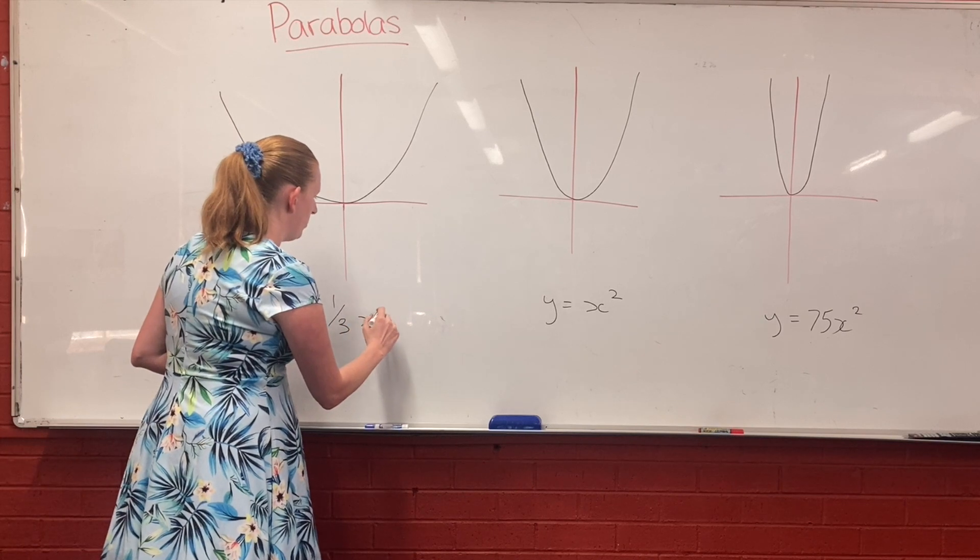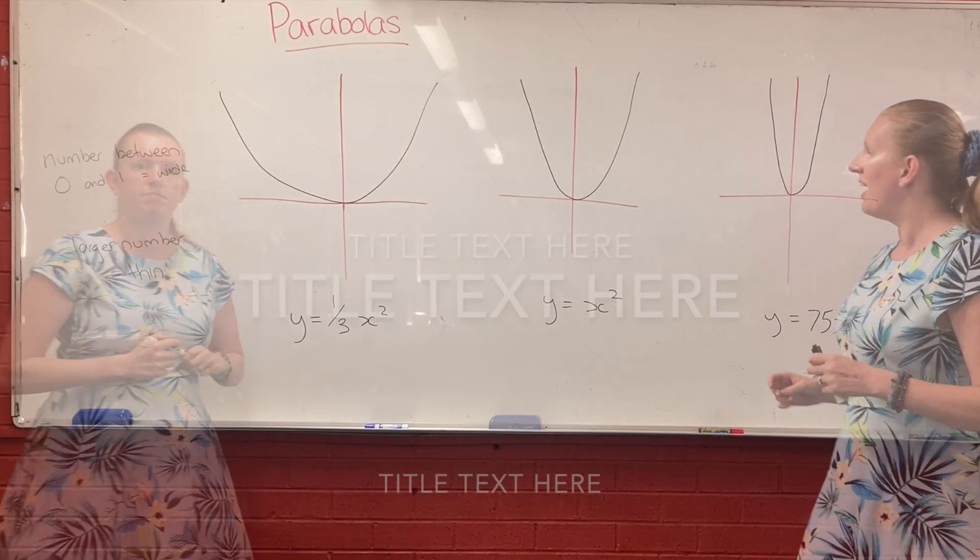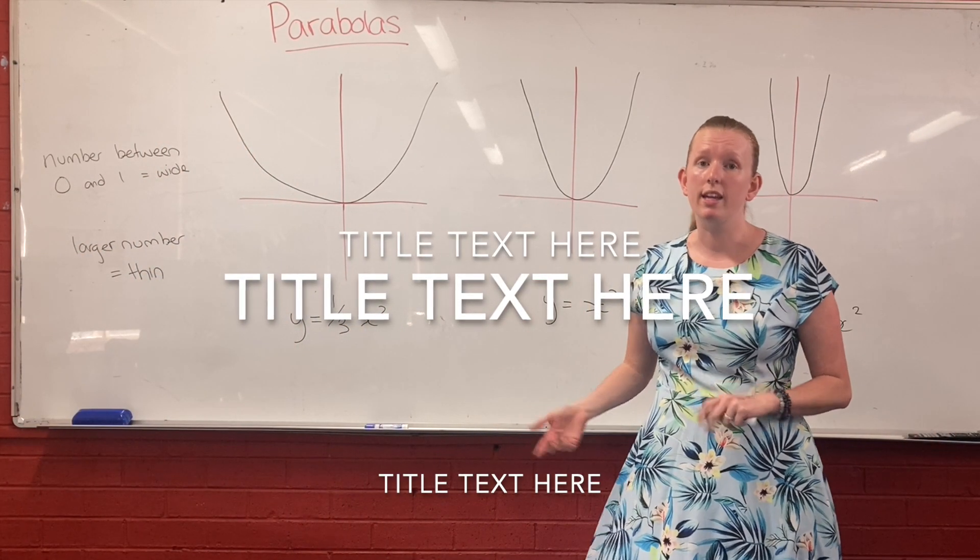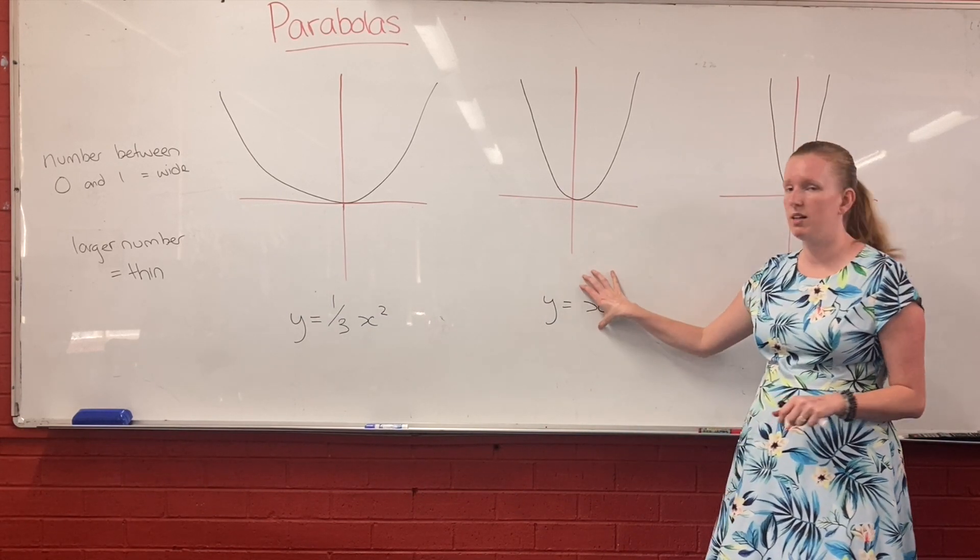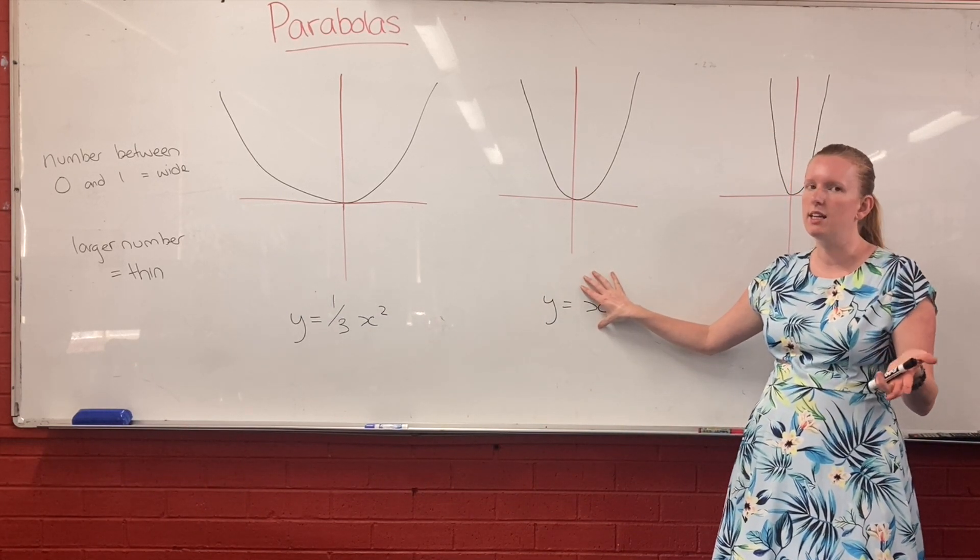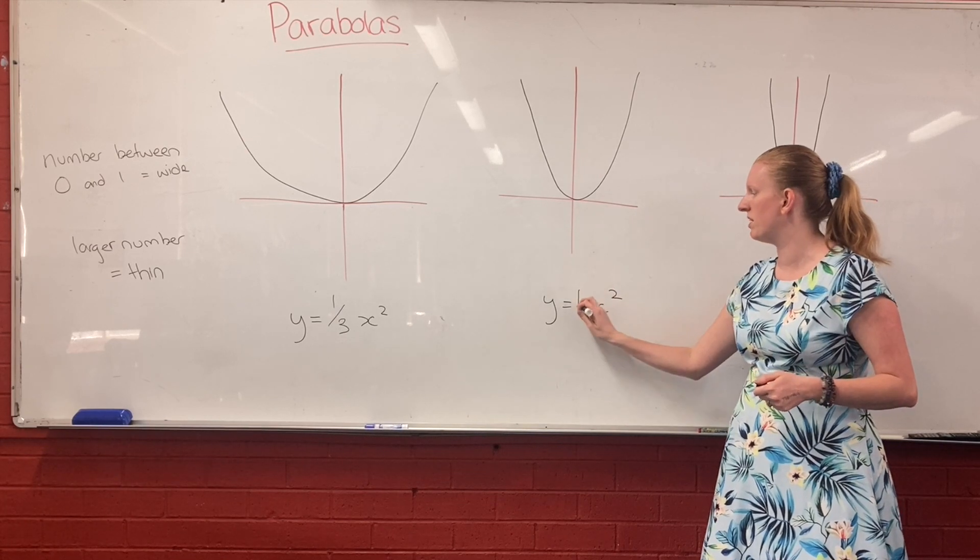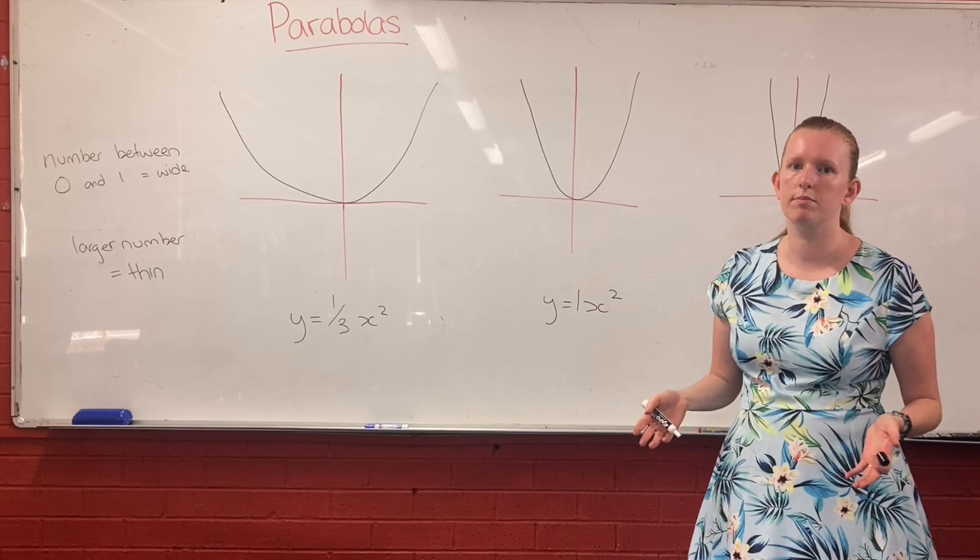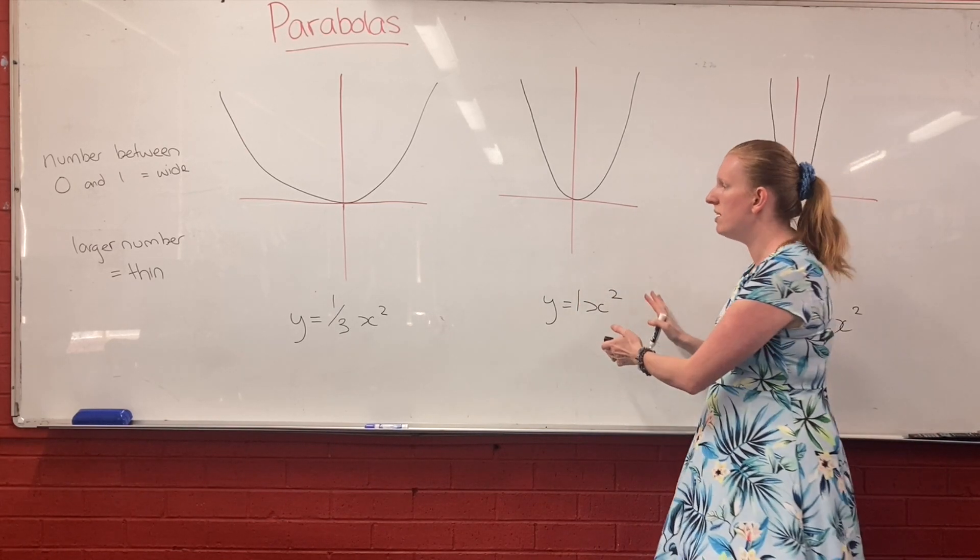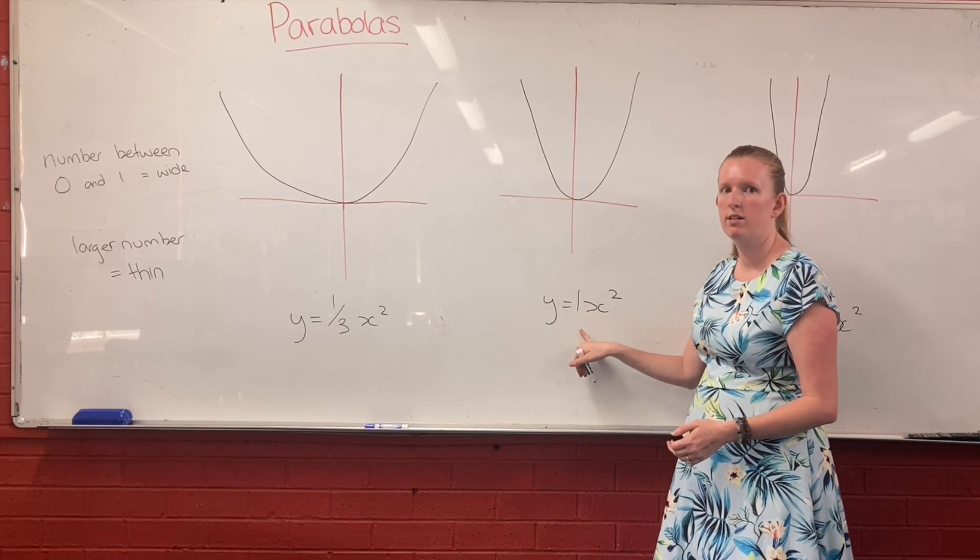So, one-third x squared. So, the moral of the story here is that your standard parabola technically has an invisible one in front of it that we just don't bother writing. So, if you've got a number smaller than one, but bigger than zero, it will make your parabola super wide.